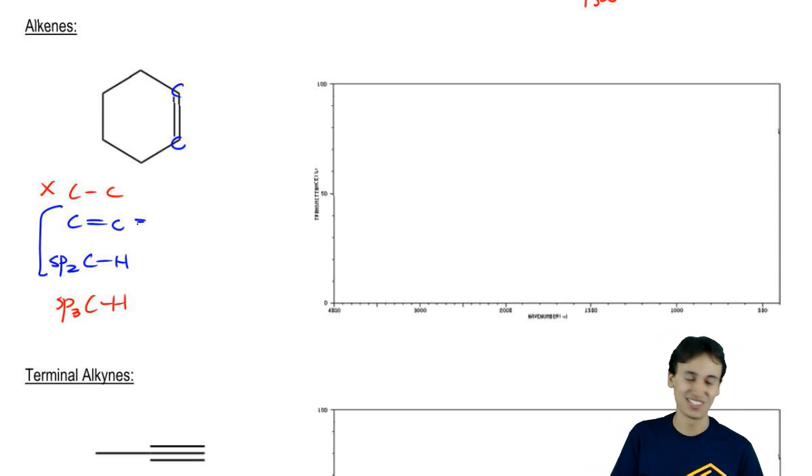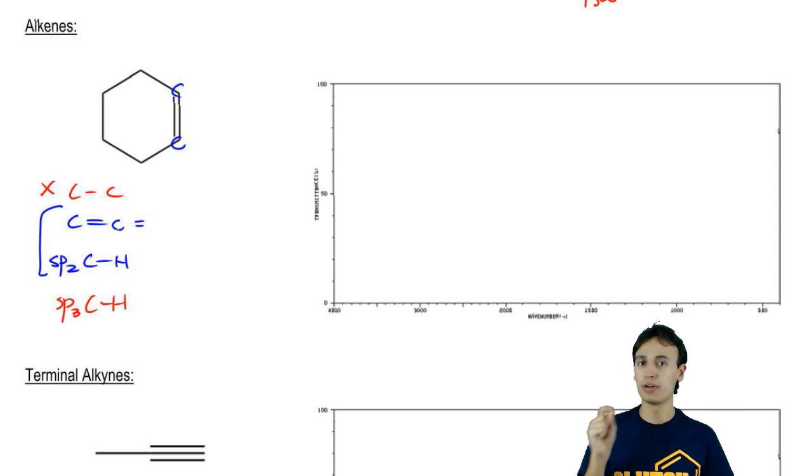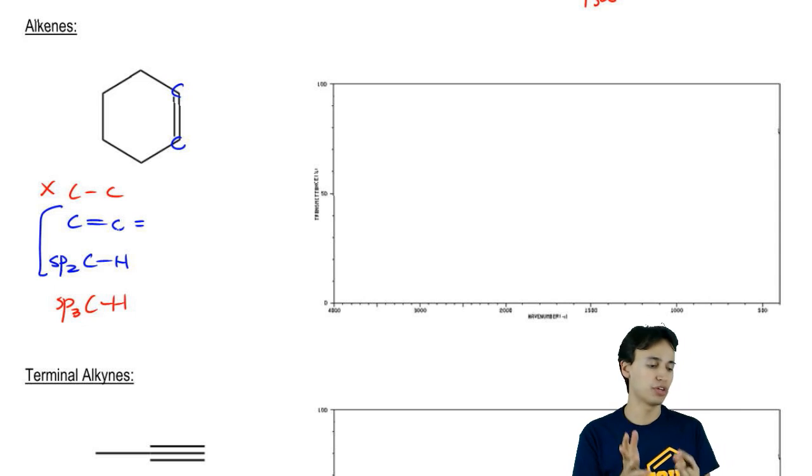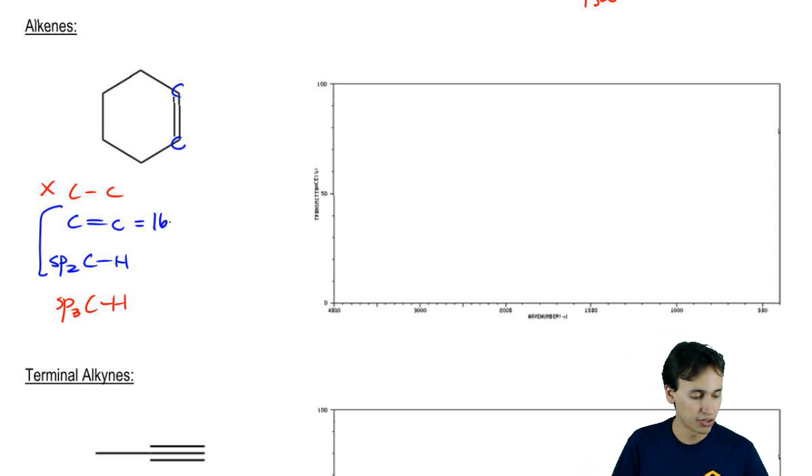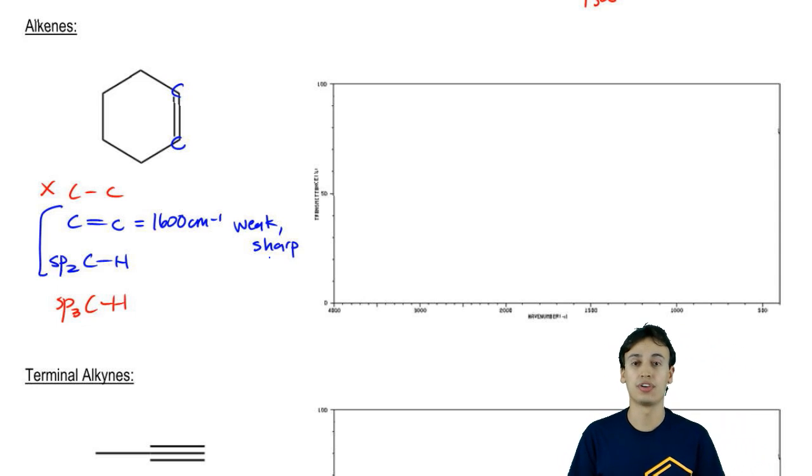These are all going to have their own peaks that you need to know. So 1600 – I'm sorry, I just gave it away. I'm on automatic mode right now. We just talked about how a C, double bond C, would result in the double bond region. That's going to be 1600. What is that going to look like? Well, that is going to be weak and sharp. So the peak at 1600 is expected to be weak and sharp.